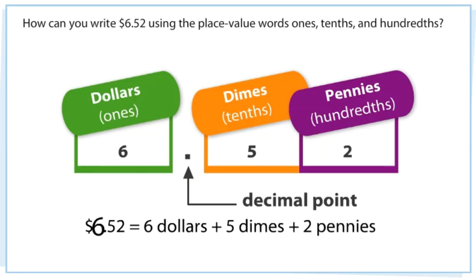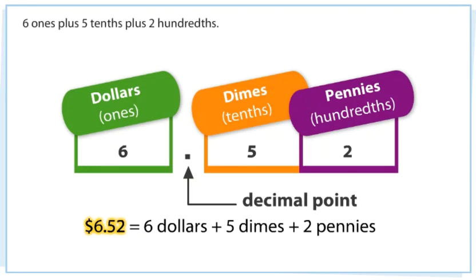How can you write $6.52 using the place value words ones, tenths, and hundredths? $6.52 equals 6 ones plus 5 tenths plus 2 hundredths.